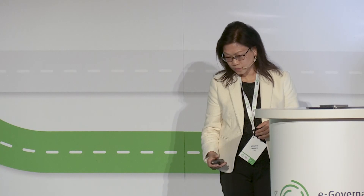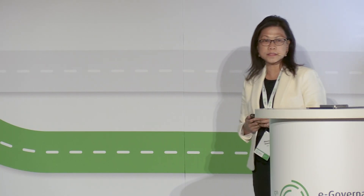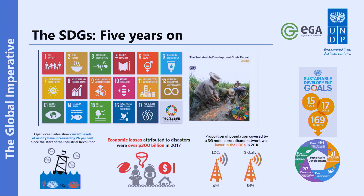The global imperative: the SDGs, the Sustainable Development Goals. I would believe that everybody in the room is quite familiar with this already. In 2015, the successor to the Millennium Development Goals was agreed on by the member states of the United Nations. From eight MDGs and about 18 targets, we moved to 17 Sustainable Development Goals and 169 targets. What you have on the screen is the 2018 report, from which I chose three slides for very important reasons.